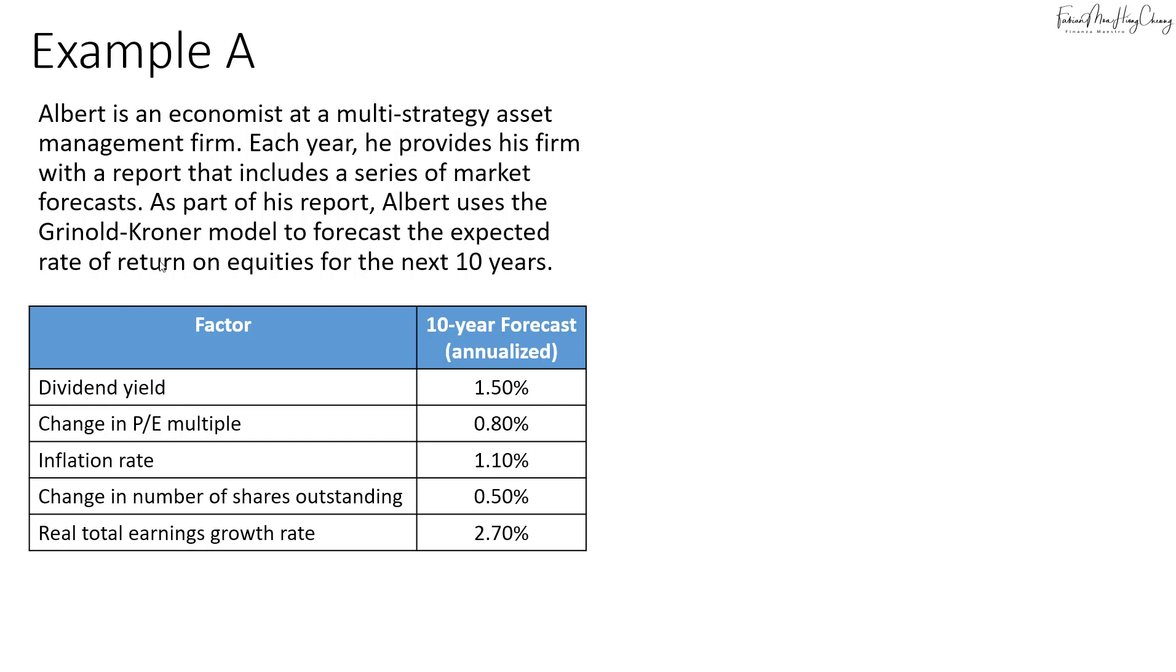If you want to use the Grinold-Kroner model, the formula is: the expected return approximately equals the forecast dividend yield, then we minus the change in number of shares outstanding, then we add in the expected inflation rate, we add in the real total earnings growth rate, and the change in P/E multiple.